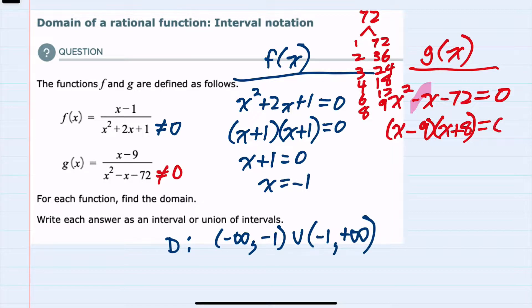And multiplying those factors to get zero would mean that either the first one, x minus 9, would have to be zero, or the second, x plus 8, would have to be zero. Solving each, I have two values, either x is 9 or x is negative 8.